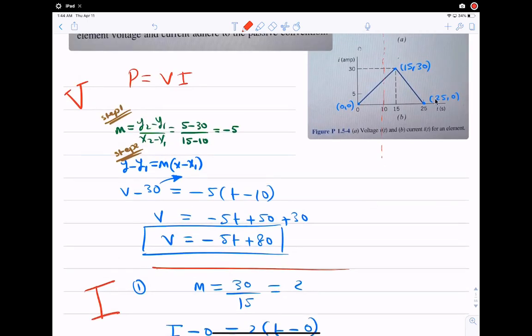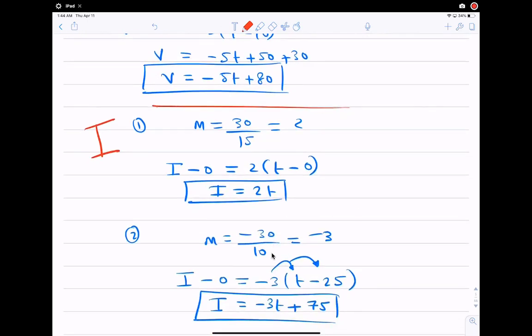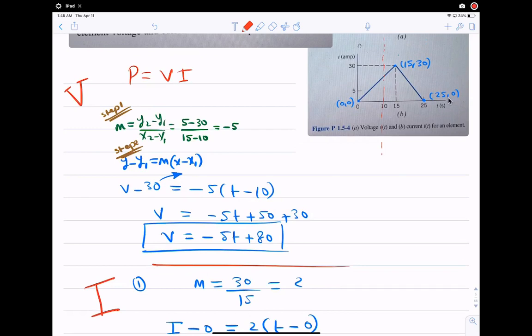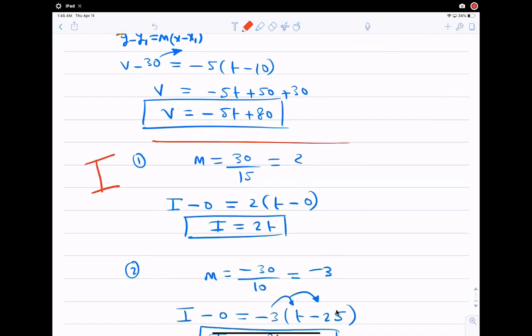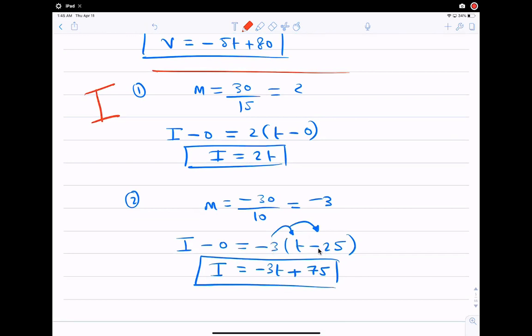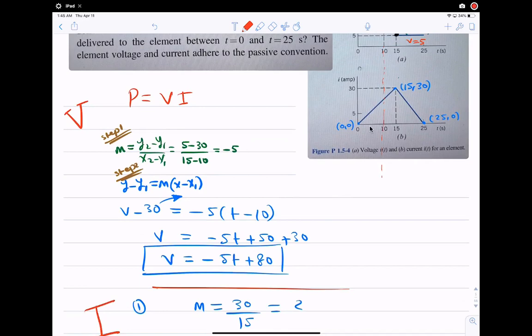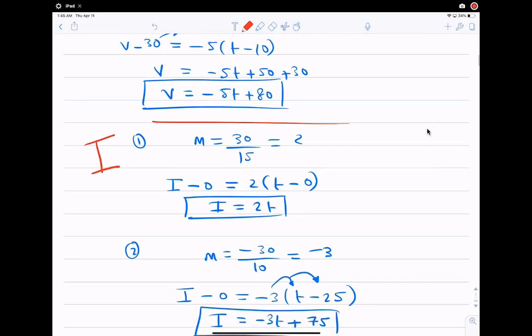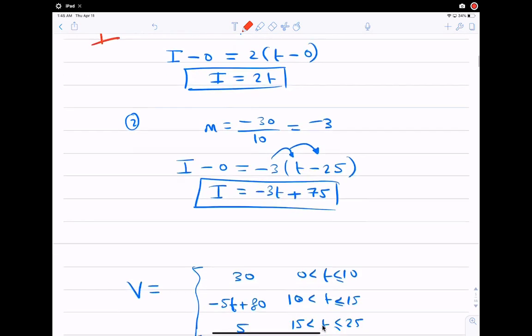Now the second part. We say 0 minus 30 over 25 minus 15. Or I went down, so it's a negative 30, over I walk to the right from 15 to 25, it's 10 steps. So it's like you're saying negative 30 over 10, which is negative 3. Again, I plug in for the m, negative 3, and here you put the y, and here the x. I picked this point because it has a 0, it's easier. So this is y1 and this is x1. So the 0 is here and the 25 is here. So here you multiply in negative 3t, negative 3 times negative 25 is positive 75. So this is the second line equation.